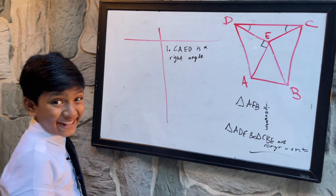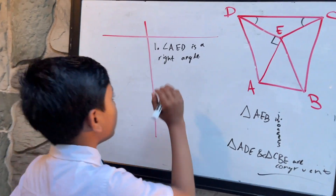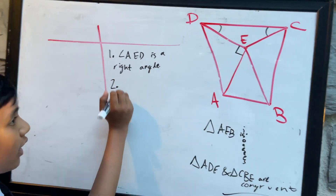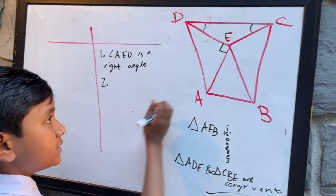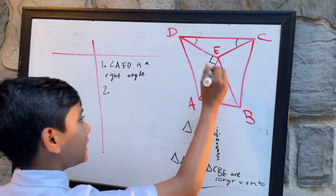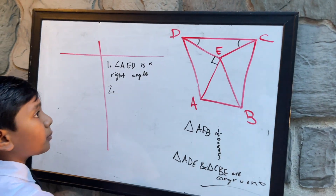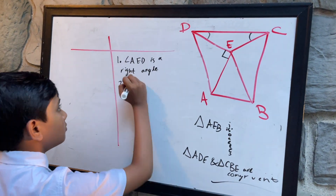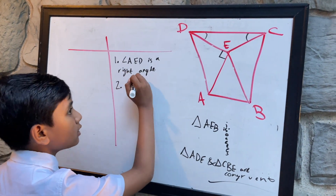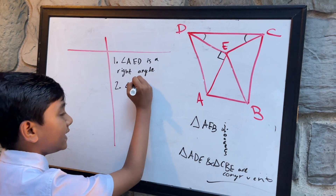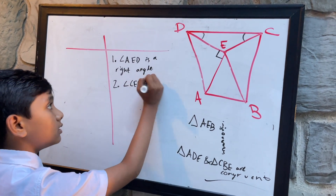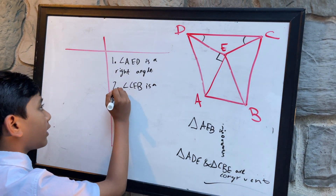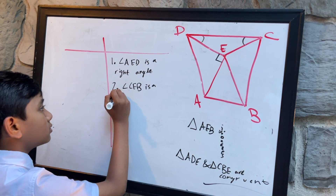Via the same logic, CE and EB are perpendicular, so angle CEB is also a right angle.